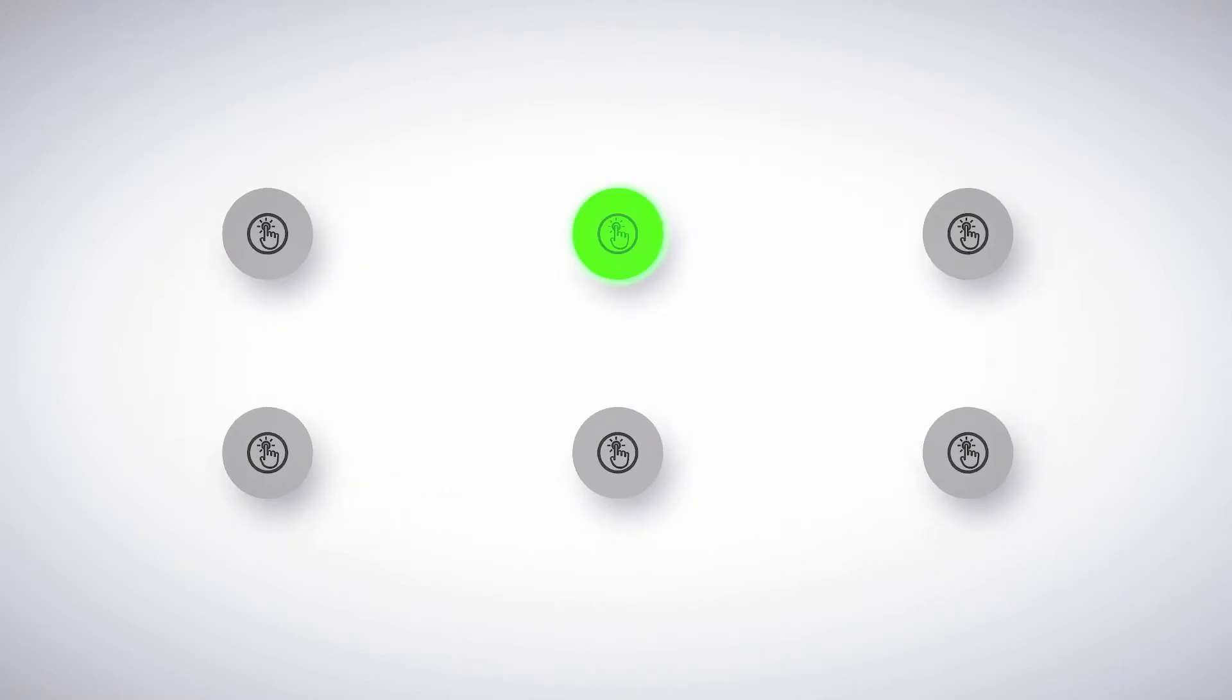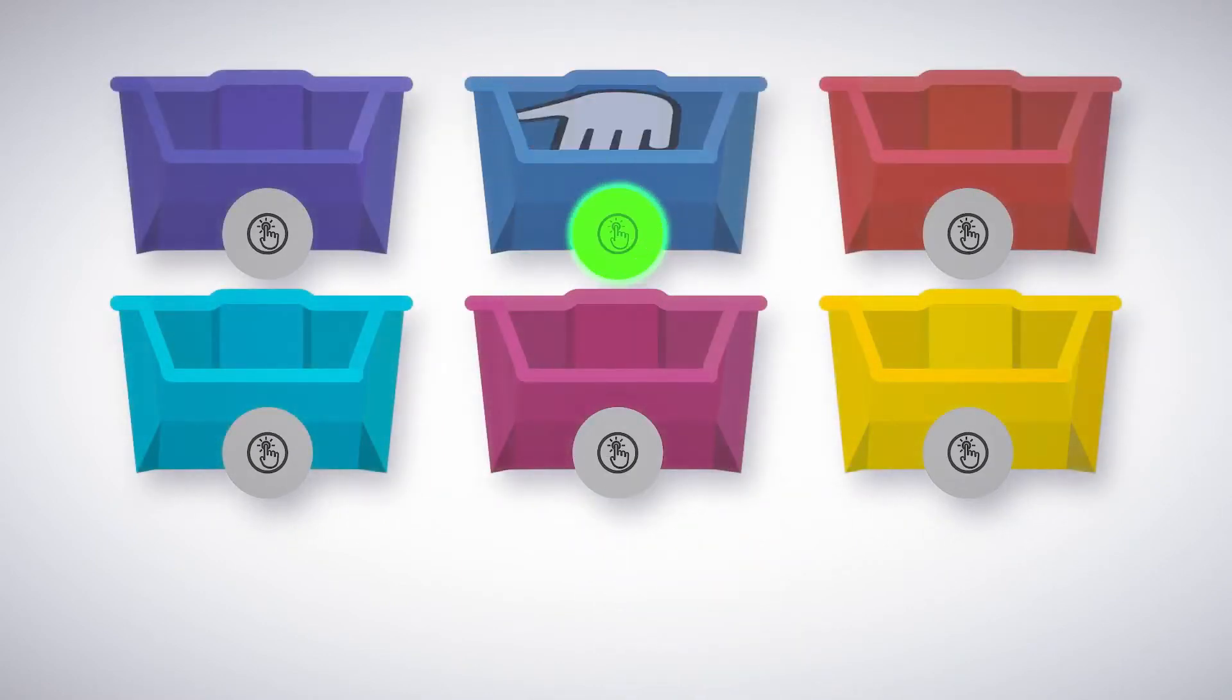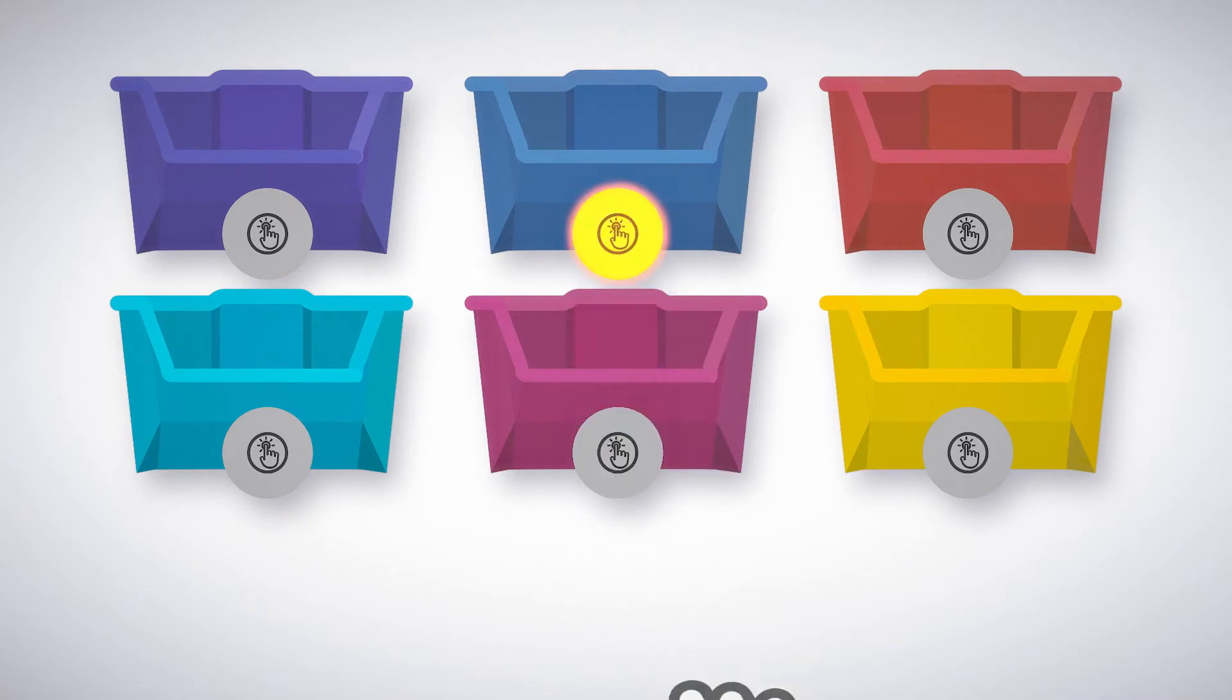Pick-to-light devices use bright, colorful light to identify which bin to pick from and then verify the correct pick with integrated sensors or touch buttons.